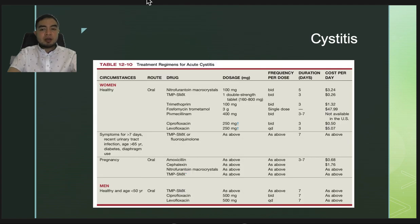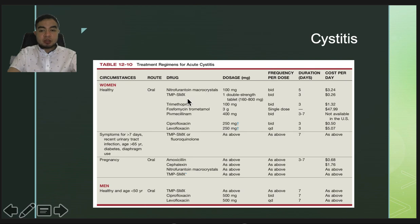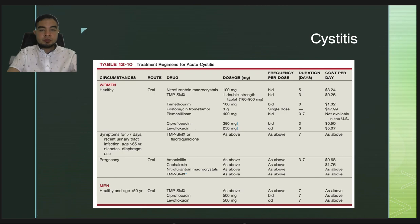Here are the treatment regimens for acute cystitis. Options include nitrofurantoin and trimethoprim-sulfamethoxazole. For pregnant patients, amoxicillin, cephalexin, or nitrofurantoin may also be given.